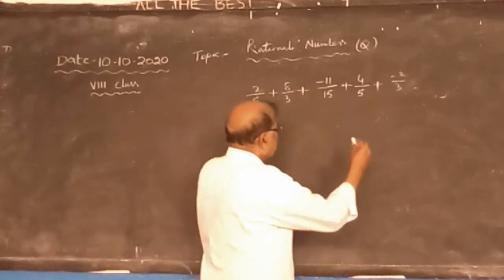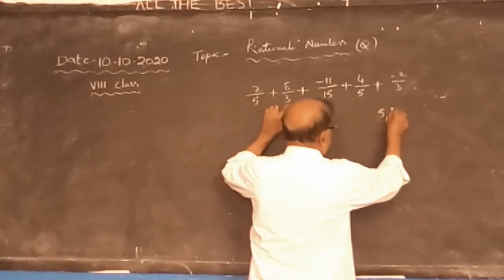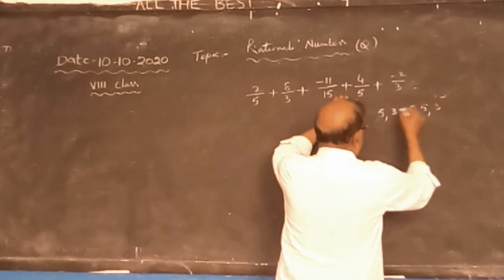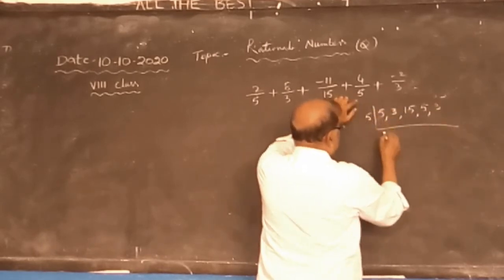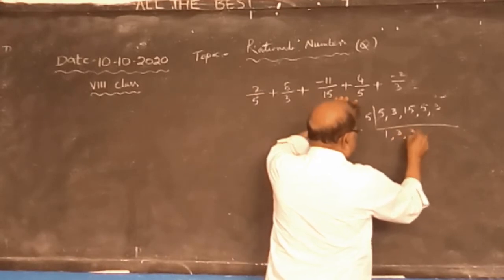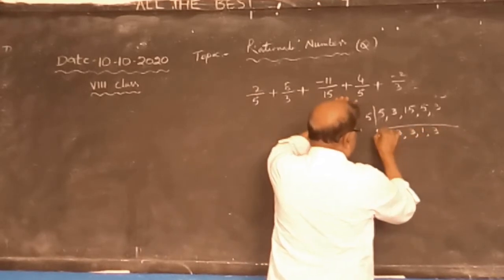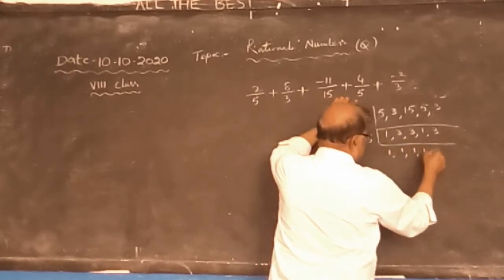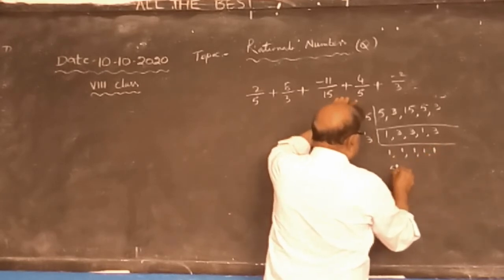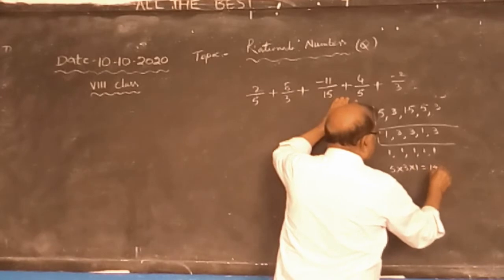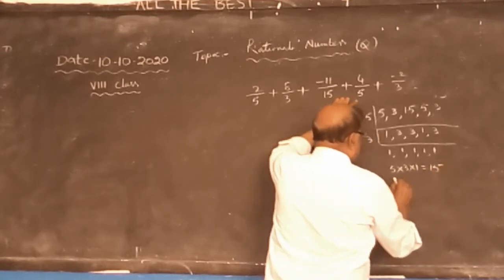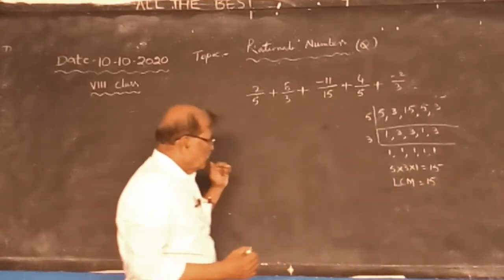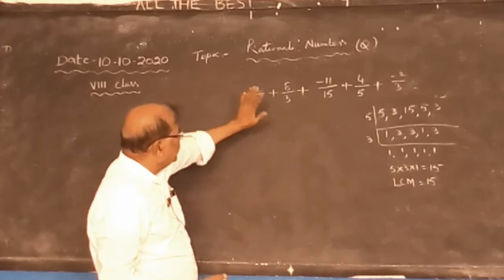How do you take LCM here? First denominator is 5, second denominator is 3, third denominator is 3. Take LCM of 5 and 3. 5 goes into 5 once, doesn't go into 3. Then 3 goes into 3 once, and 3 once. So the LCM is 5 into 3, which is 15. So the LCM is 15.